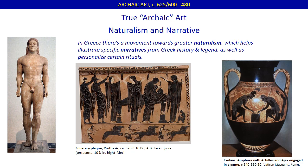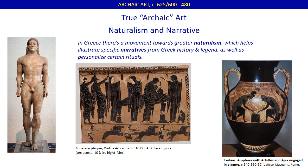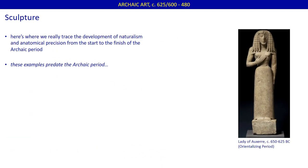In the last class we discussed how this was accomplished in the pictorial arts, primarily on vase painting. Today we are turning to the plastic arts, or sculpture. It is here, more than in the 2D arts, that we can really trace the development of naturalism with regard to anatomical precision throughout the archaic period.